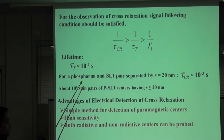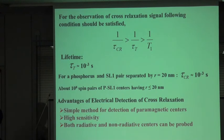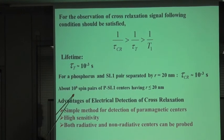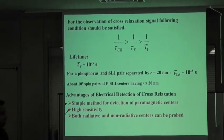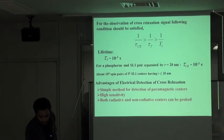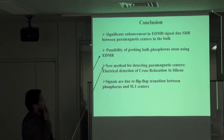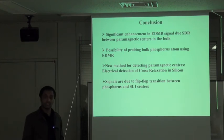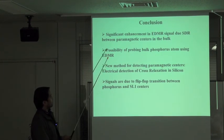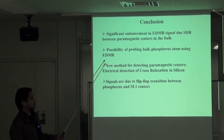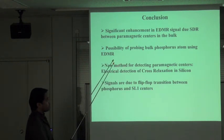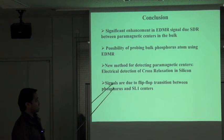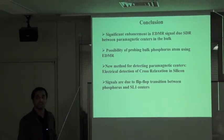Electrical detection of cross relaxation is a simple method for detecting paramagnetic centers: you simply scan the magnetic field without applying any resonance frequency. It is highly sensitive, detecting as few as 10^8 spins. We can detect both radiative and non-radiative centers. In conclusion: we see significant enhancement in EDMR signals under gamma irradiation, we demonstrated the possibility of probing bulk phosphorus atoms using EDMR, and we introduced a new method for detecting paramagnetic centers—electrical detection of cross relaxation—arising from flip-flop transitions between phosphorus and SL1 centers.